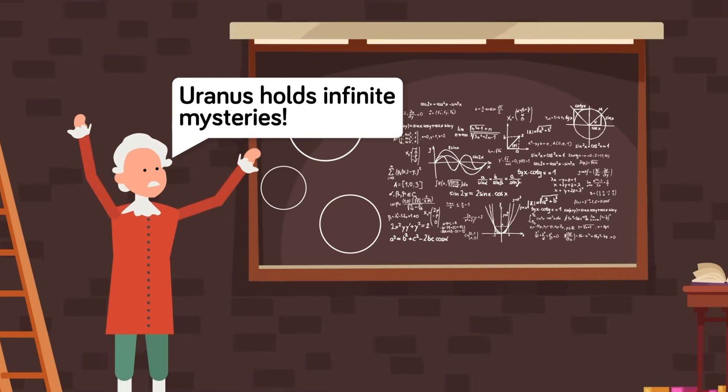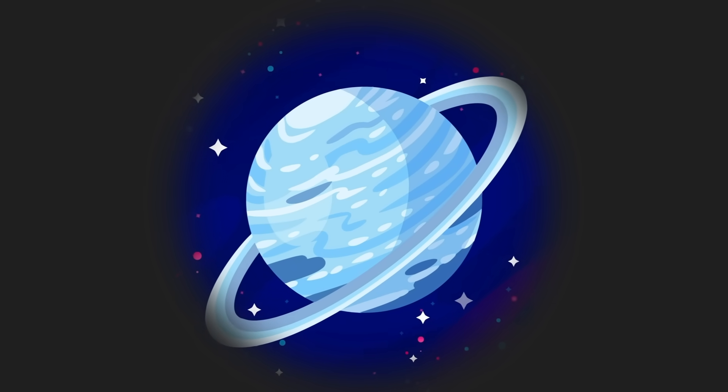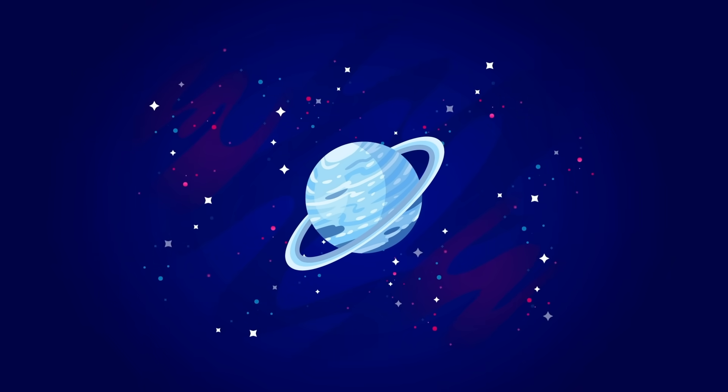But when they were applied to Uranus itself, the math didn't work. There was something else out there having an invisible effect on Uranus, something that was very difficult to see even with the most powerful telescopes.